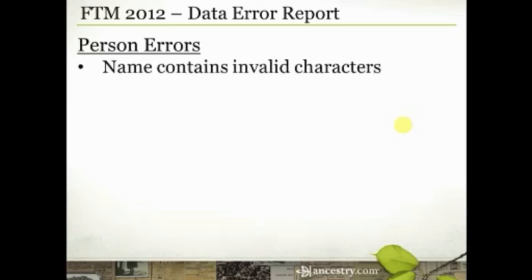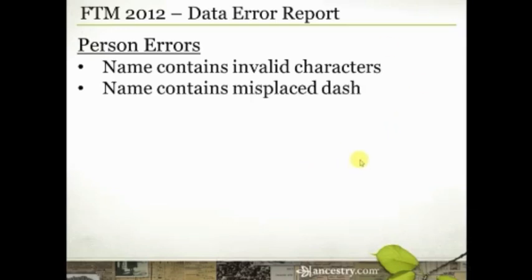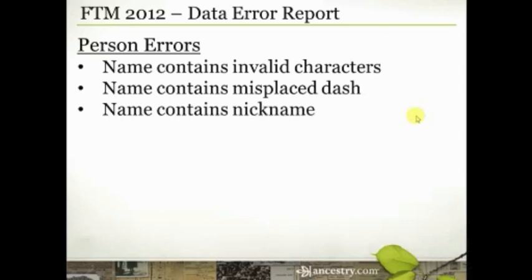The first one is any name that contains an invalid character — so you accidentally hit a period or an apostrophe while typing a name. It'll pull those up, let you review them, and make sure they're accurate. If they're not, you can go ahead and change them. Sometimes we just hit random characters, sometimes dashes are misplaced, or we thought a name was hyphenated when it shouldn't be. This gives us a list of all names in our database containing those characters so we can review them.